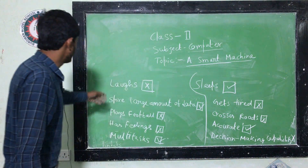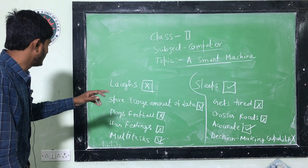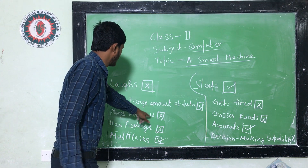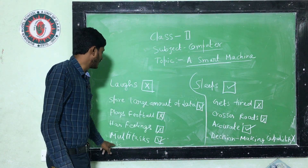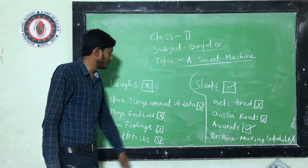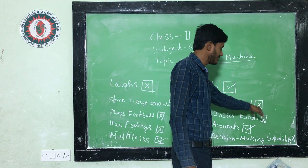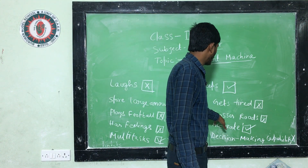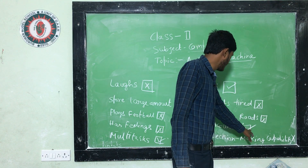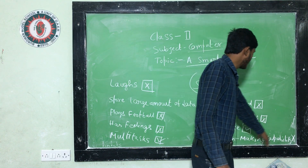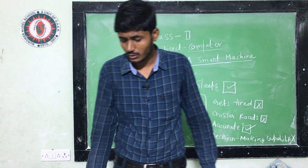Summary of answers: laughs — human; store large amount of data — computer; play football — human; has feelings — human; multi-task — computer; sleeps — computer; gate style — human; process — human; accurate — computer; decision-making capability — human.